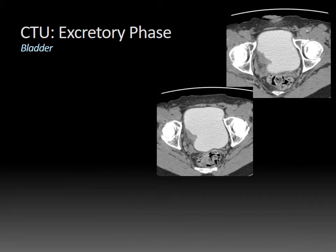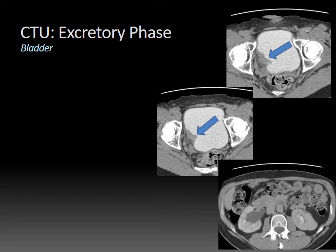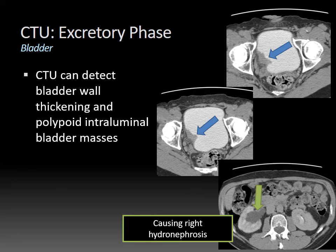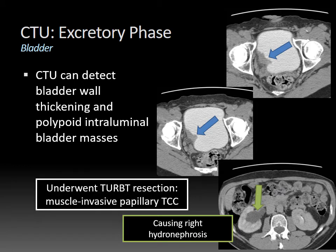Here is a different case showing excreted contrast within the urinary bladder. The contrast is homogeneous throughout the bladder because the patient either walked around or was rolled before the scan to mix excreted contrast with unopacified urine. The patient is in the prone position, and there's a polypoid intraluminal mass at the right ureteral vesicular junction. The right kidney shows associated hydronephrosis and dilatation of the proximal ureter. CT urography is excellent at detecting bladder wall thickening and polypoid intraluminal masses. This patient had a transurethral bladder tumor resection yielding muscle-invasive papillary transitional cell carcinoma.